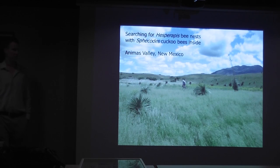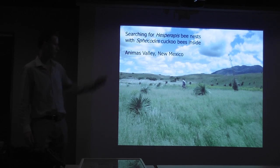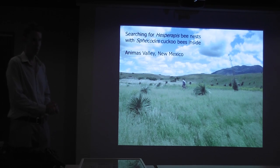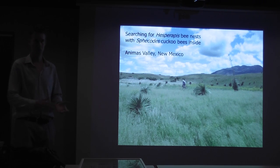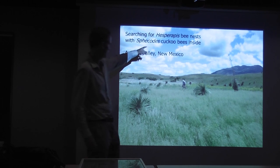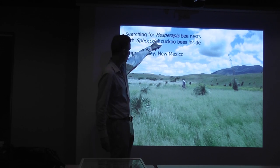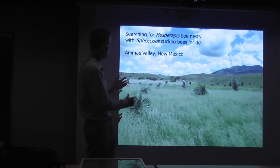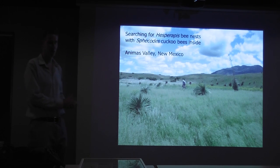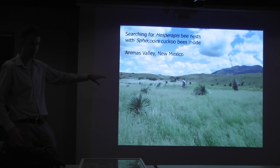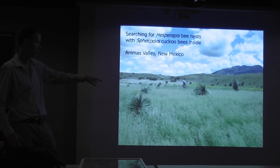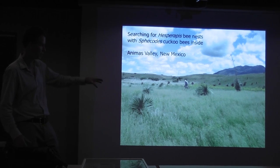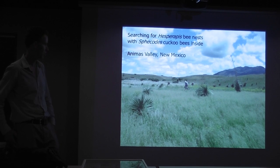Bee research looks like we're just wandering around in the desert, but we actually have hypotheses that we're testing. We're trying to discover material useful for phylogenetic studies and so forth. In this case, we have an association between a bee and another bee which is a parasite of the first bee — a new association at the family level. We only have circumstantial evidence of bees flying over the ground; we want to find the nest site, then dig it up and do a proper study.